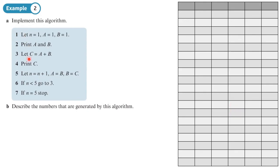The first column heading will be the step number so I can track where I'm going. I can see letters representing numbers — n starts as one and gets increased by one later, so n is one heading. Variables a, b, and c will change as we go through, so I'll include those as headings too.